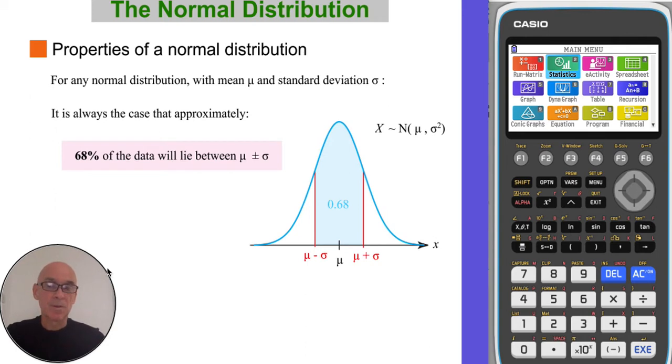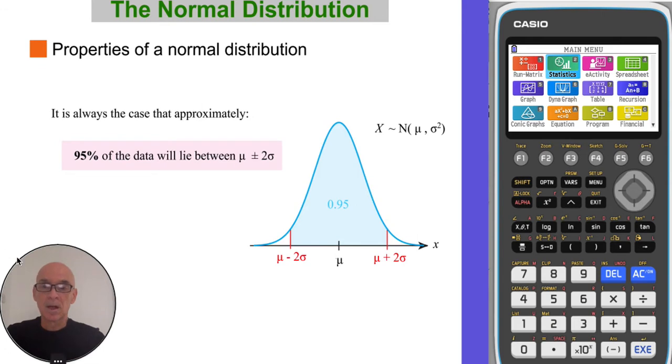There are certain properties of a normal distribution that you need to know. It is always the case that approximately 68% of the data will lie within plus or minus one standard deviation of the mean value. And there is a 95% chance that x will lie within plus or minus two standard deviations from the mean value.